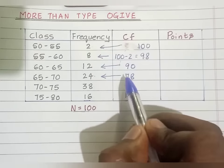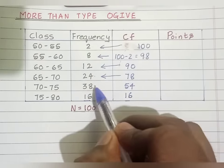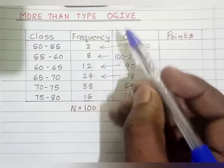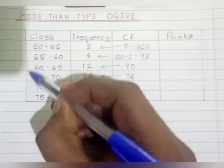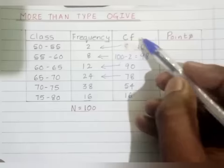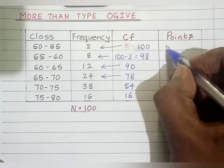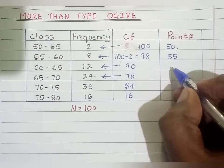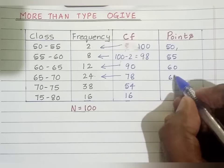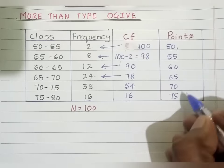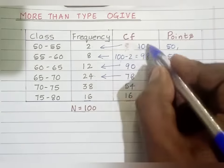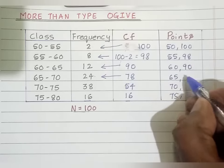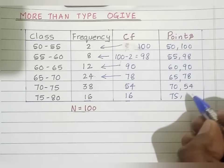For more than type OJAL, you have to consider lower limits, which are plotted against the cumulative frequency. The lower limits are: 50, 55, 60, 65, 70, 75. The corresponding cumulative frequency values are: 100, 98, 90, 78, 54, and 16.